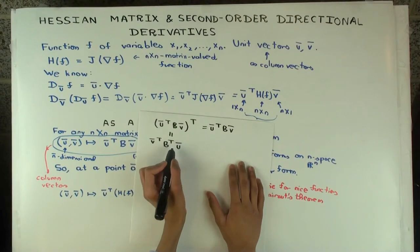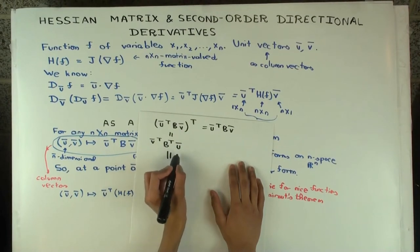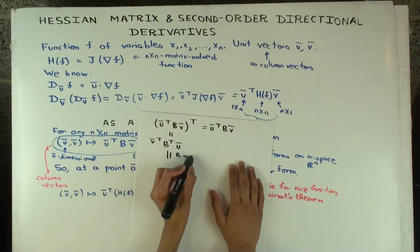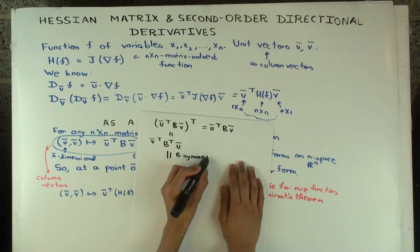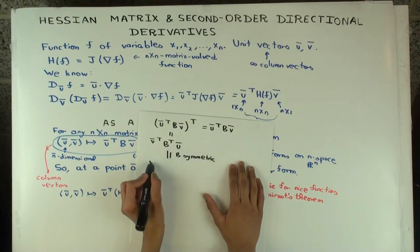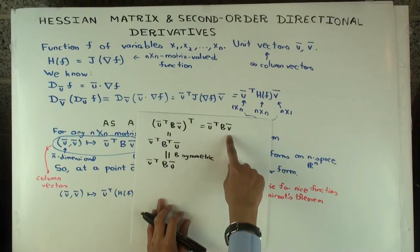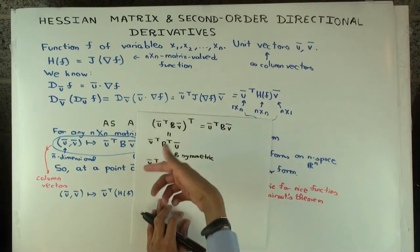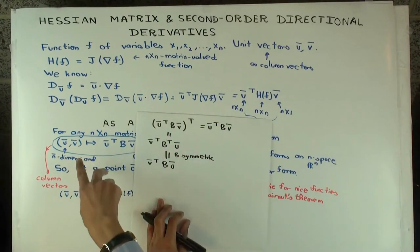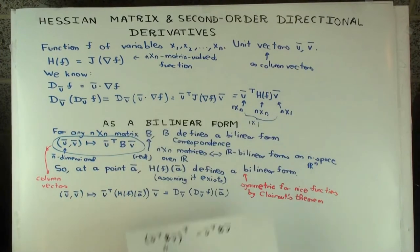But now what do we know? If B is symmetric, what is B transpose? B. So we get V transpose BU. Which is the same as U transpose BV. Which means that the output is the same whether we feed in U and V or V and U.